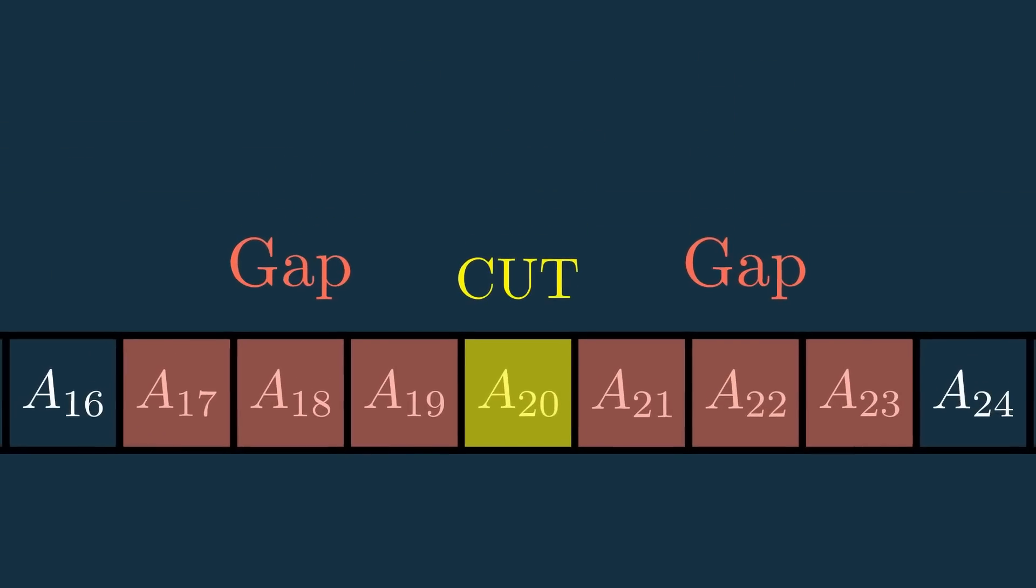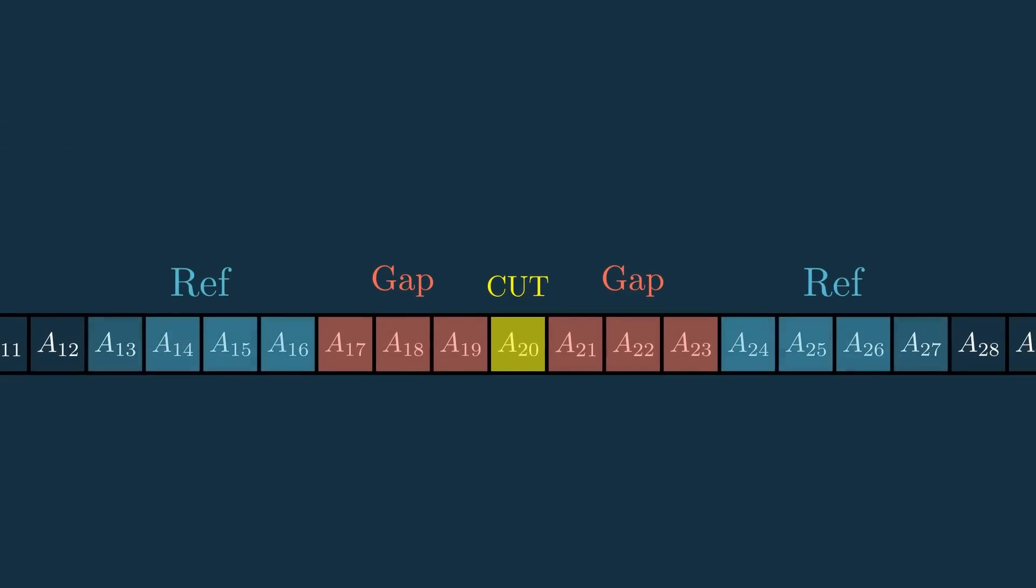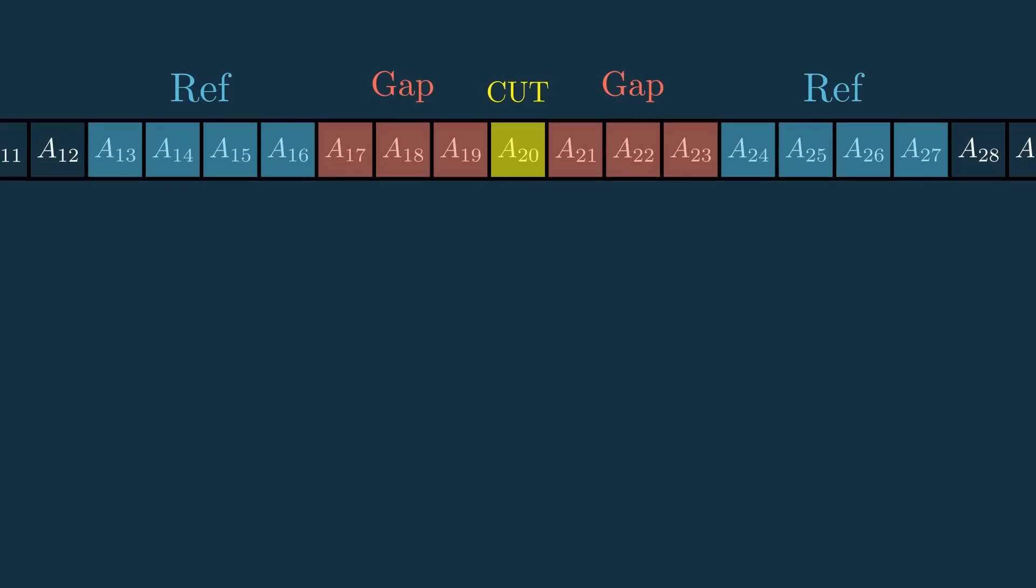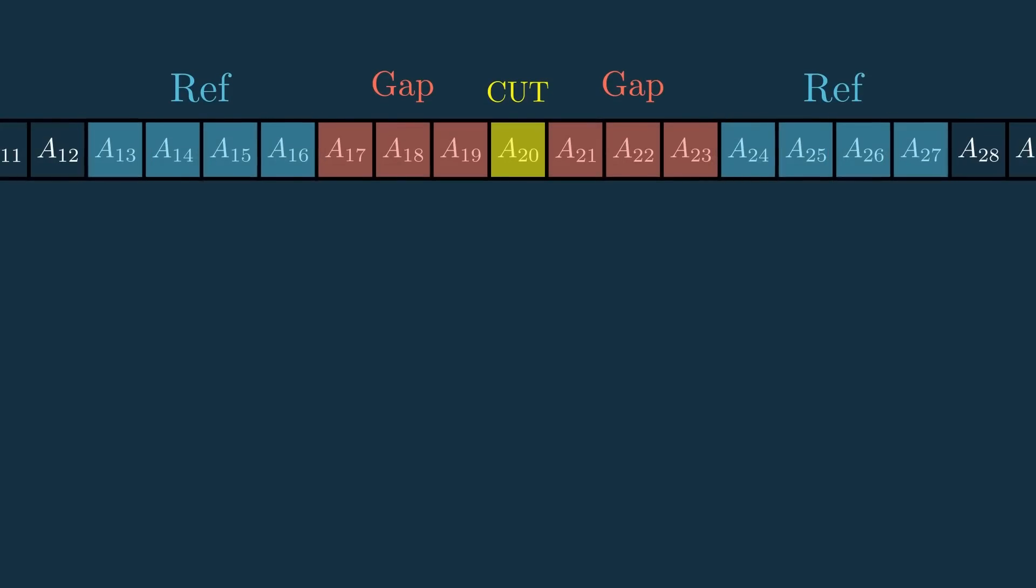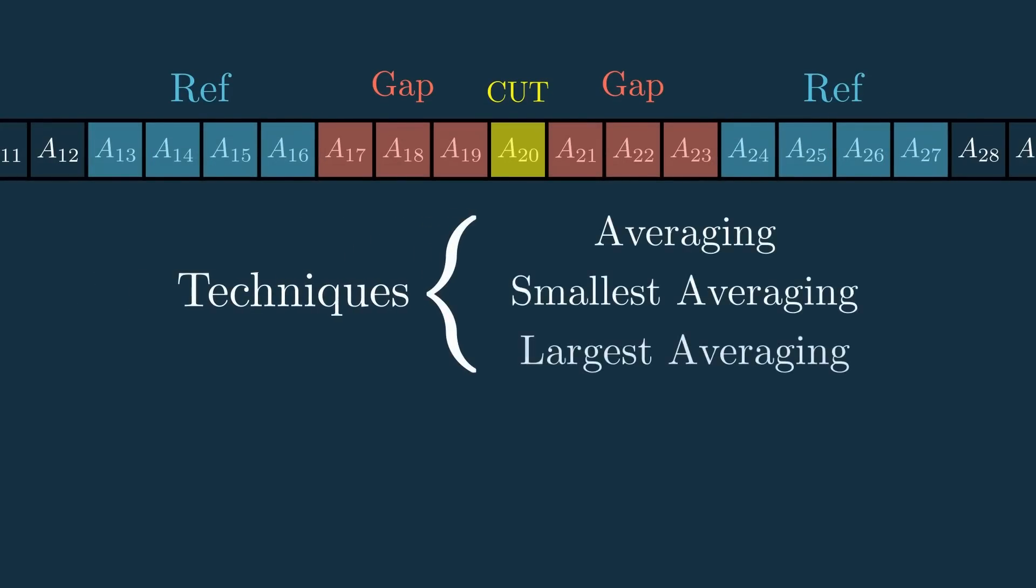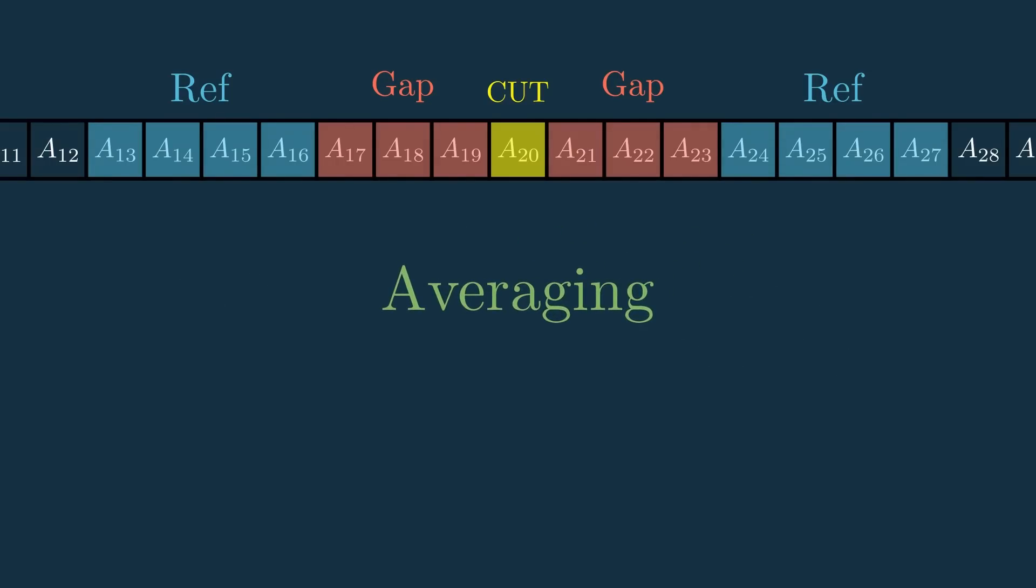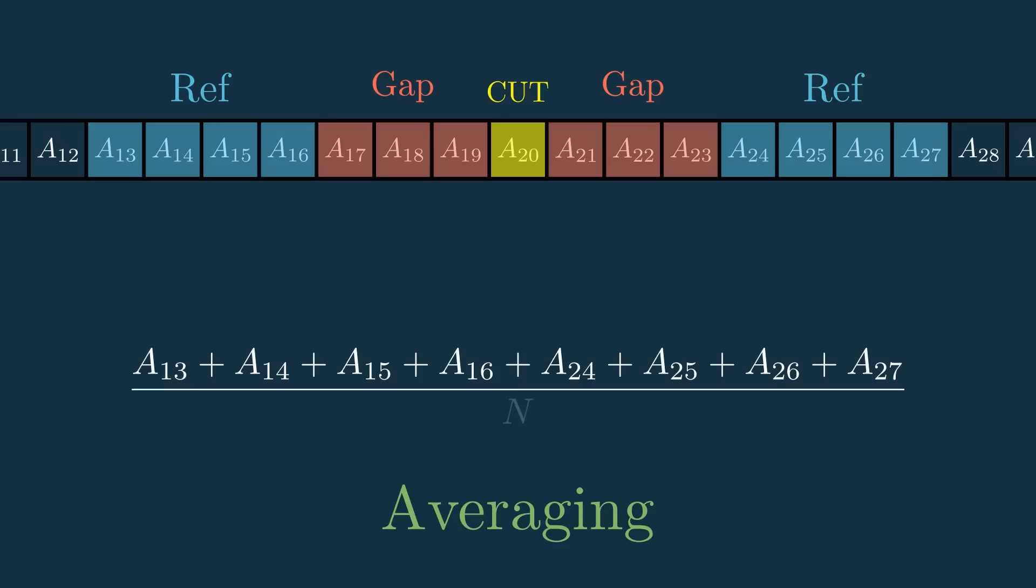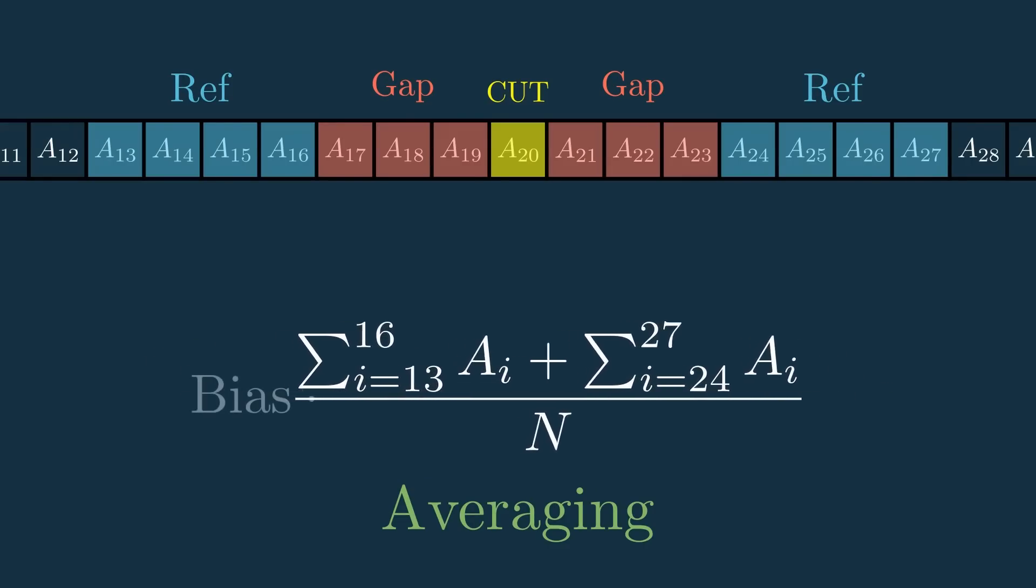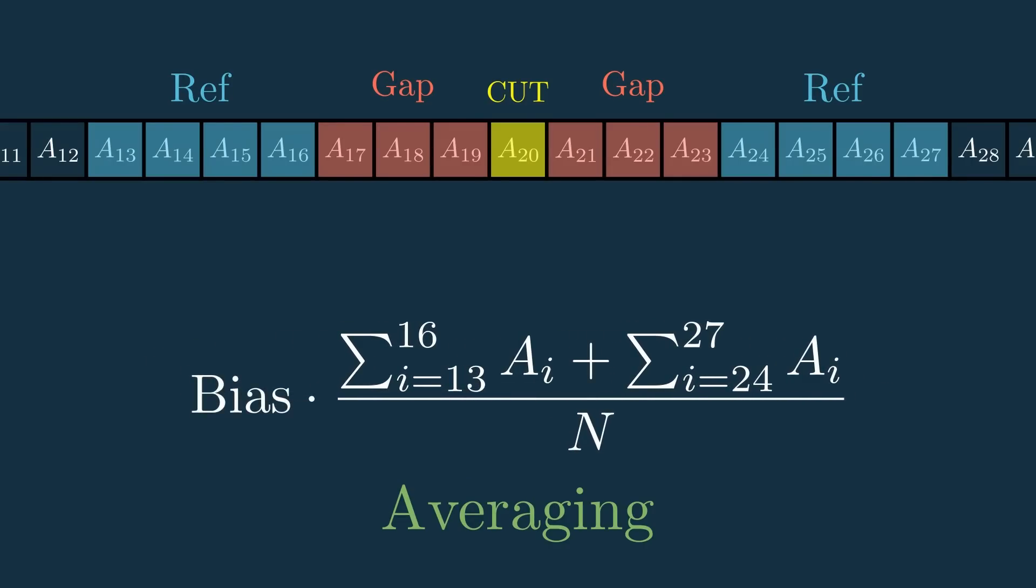Then outside those gap cells, we take several cells as the reference cells, and these are what we actually use for the computation. Now there's a few things we could do with the reference cells, but a common technique we'll talk about is the aptly named cell averaging technique. With this, we take the reference cell values and get their average or mean. We then take this average value and multiply it by a bias, which determines how much wiggle room you want to give your targets before dropping below and being classified as noise.